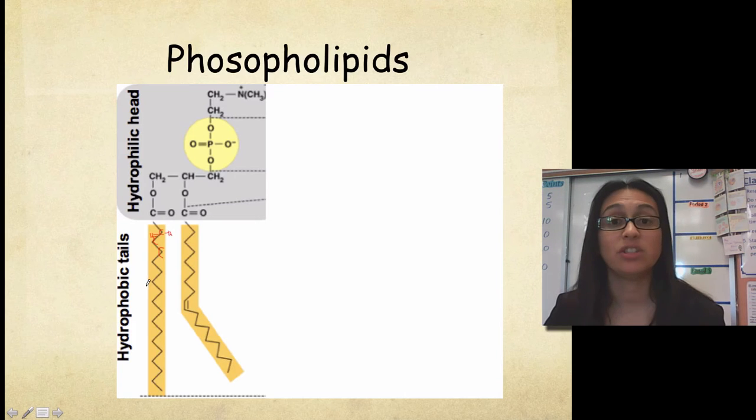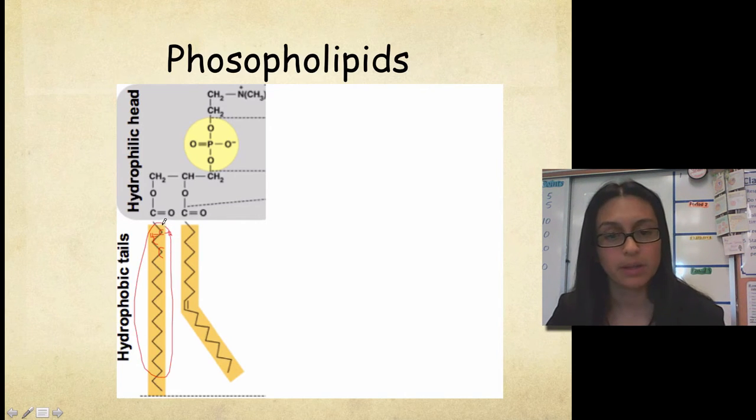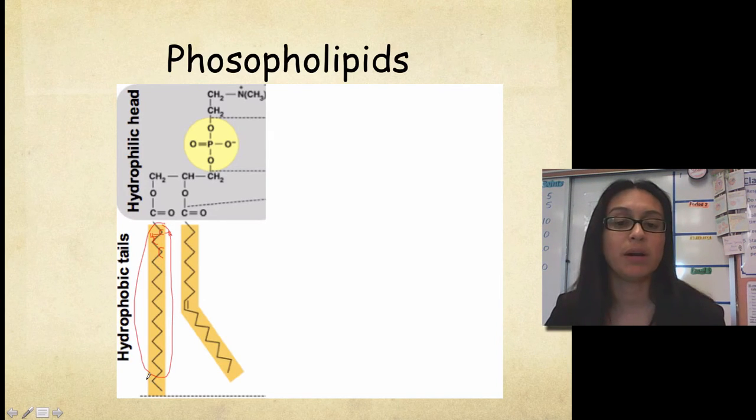So we have a fatty acid chain here. This one here, if you take a look at it, this is a saturated fatty acid. And we know that because we don't see any double bonds. This other fatty acid here has a double bond there, which makes it an unsaturated fatty acid.